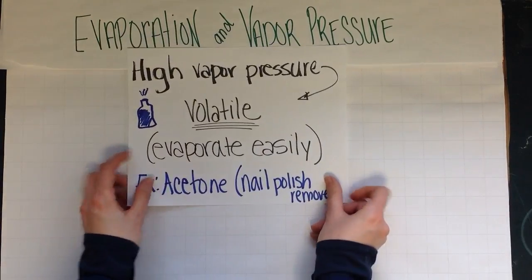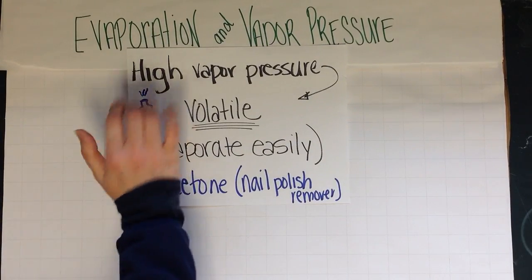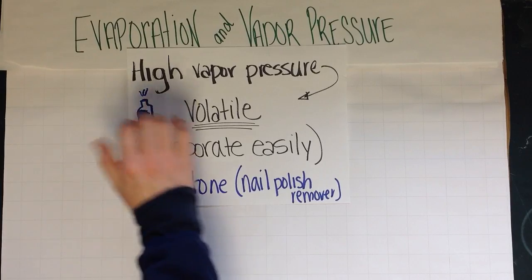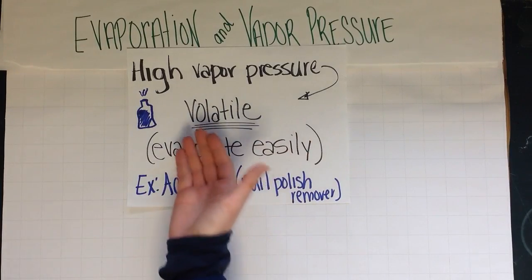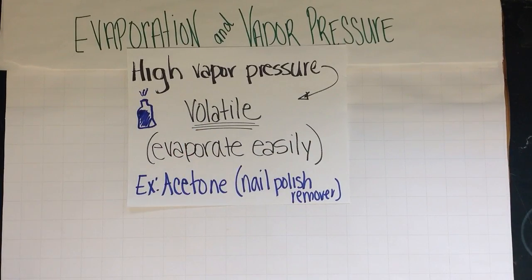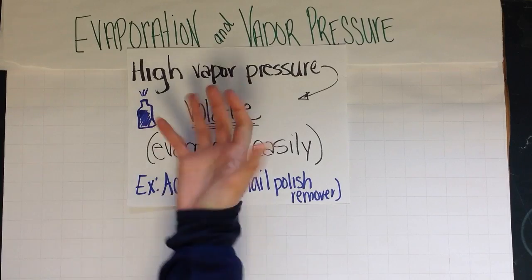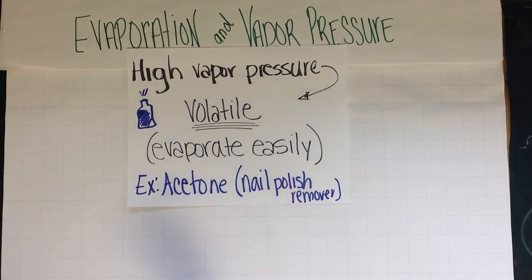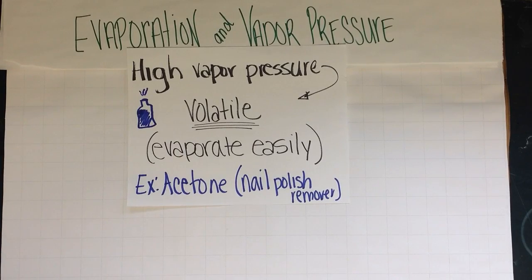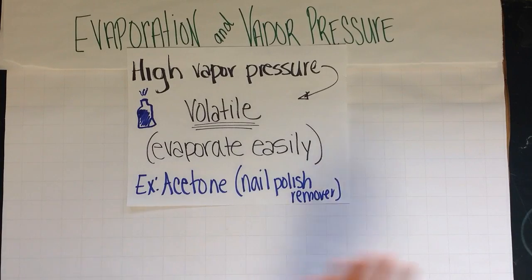If a substance has a high vapor pressure, it's said to be very volatile. Volatile means that it evaporates very easily. We often think of volatile as meaning out of control — and in science, it's like the molecules are kind of out of control: they start evaporating, they have enough energy to evaporate. So think of all that energy being volatile.